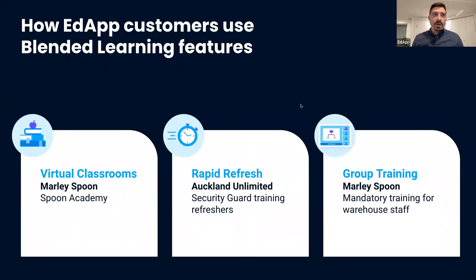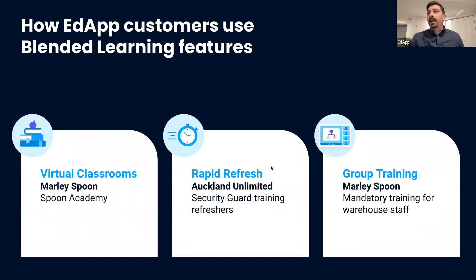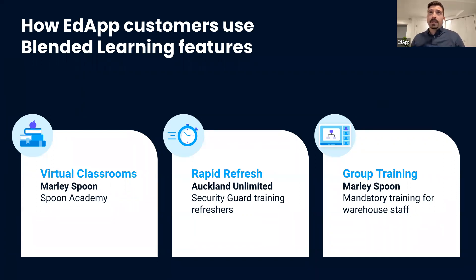For virtual classrooms: Marley Spoon runs Spoon Academy, where employees teach other employees about certain topics. Auckland Unlimited in Australia uses Rapid Refresh for security guard training refreshers, pushing extra questions based on topics from completed micro learnings. And Marley Spoon has also started using group training as mandatory training for warehouse staff on a warehouse floor — and it's been working really well.